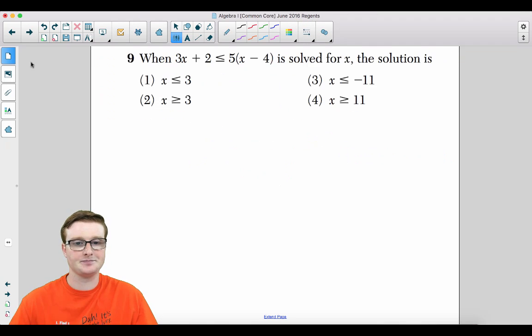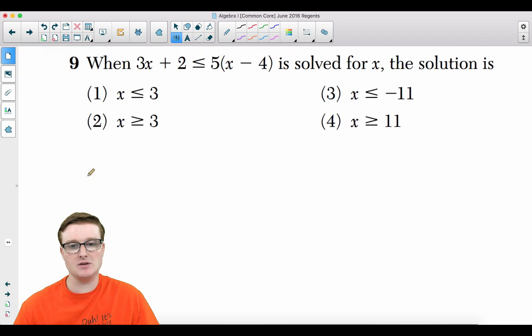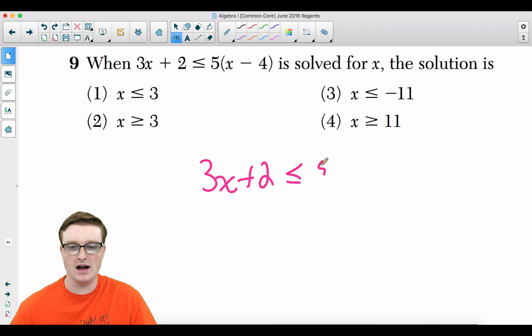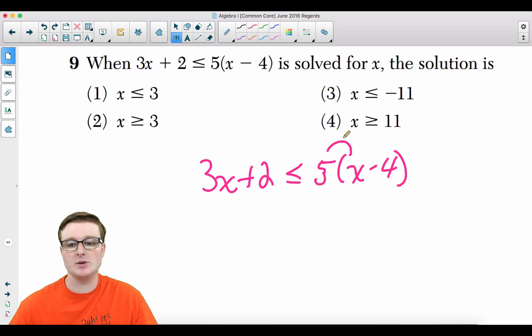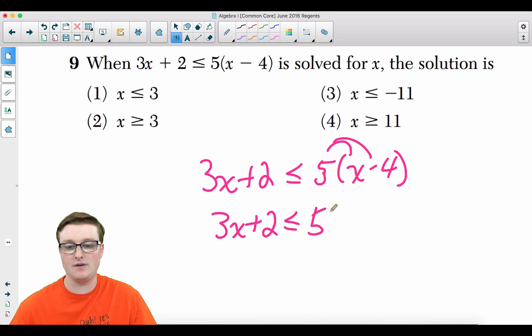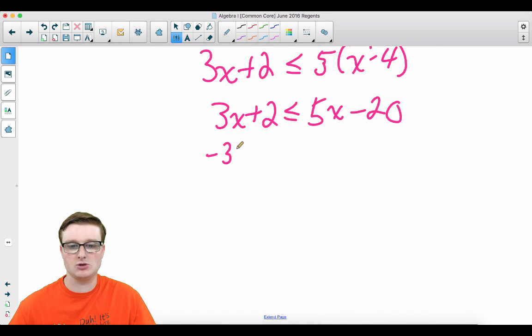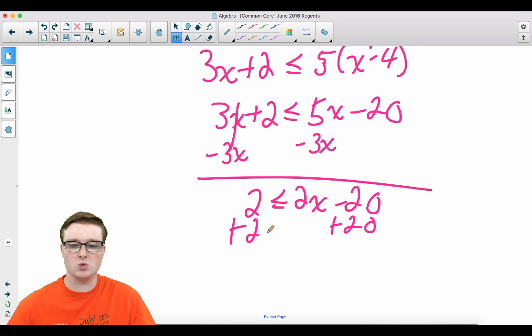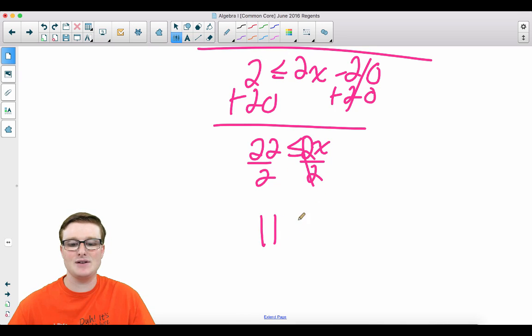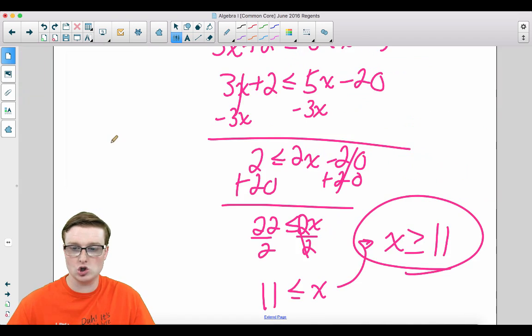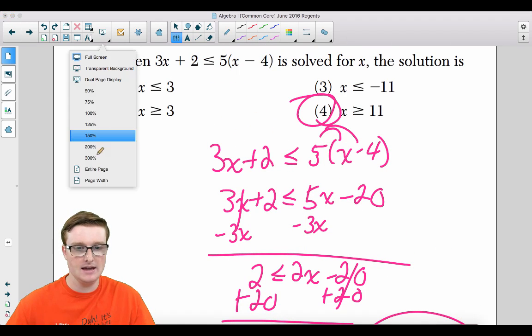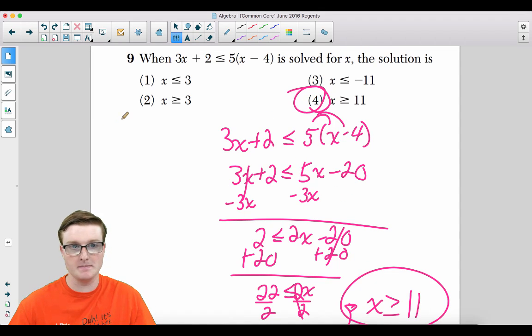Moving on to number nine. When 3x plus 2 is less than or equal to 5 times x minus 4 is solved for x, the solution is what? So we have 3x plus 2 is less than or equal to 5 times x minus 4. Distribute that 5. You get 3x plus 2 is less than or equal to 5x minus 20. Now from here, we're going to subtract the 3x on both sides. We get 2 is less than or equal to 2x minus 20. Now you add the 20 on both sides. You get 22 is less than or equal to 2x. Divide by that 2 on both sides and you get 11 is less than or equal to x, which is the same thing as saying x is greater than or equal to 11, which is going to be choice four.